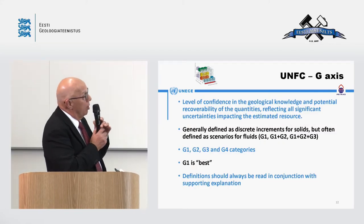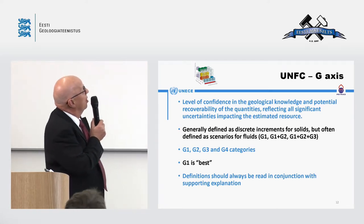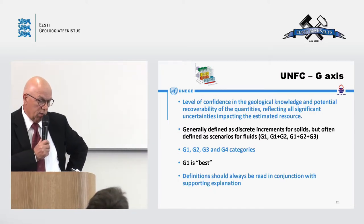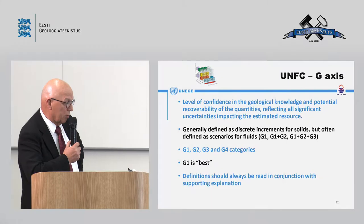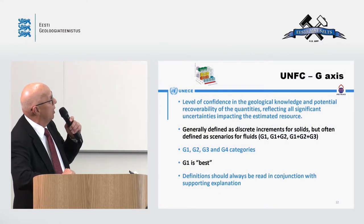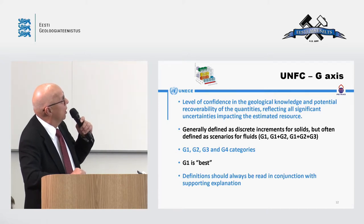The G-axis is the geological axis, reflecting the level of confidence in the geological knowledge and potential recoverability of quantities. It reflects all significant uncertainties impacting the estimated resources. In general terms, for solids it is often defined as discrete increments, but for fluids like oil and gas it would be scenarios such as G1; G1 plus G2; or G1 plus G2 plus G3. There are four categories: G1, G2, G3, and G4 for undiscovered quantities — G1 is the best.